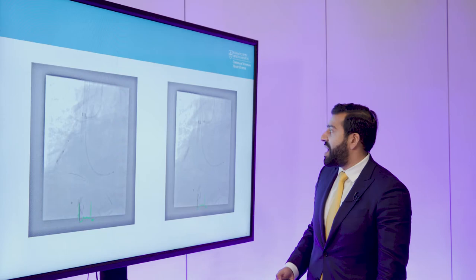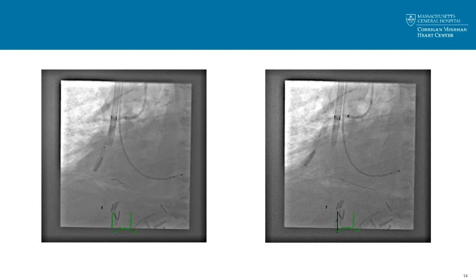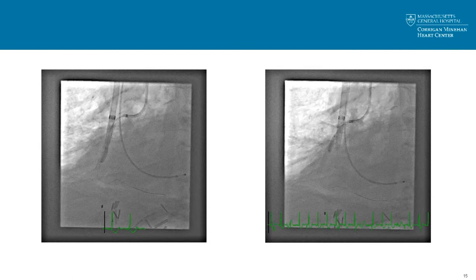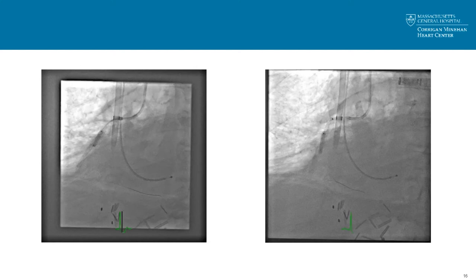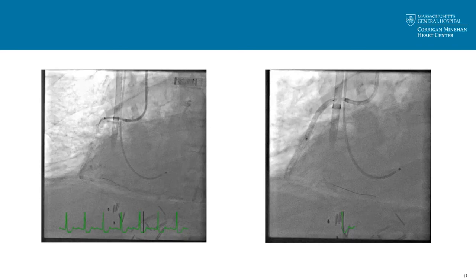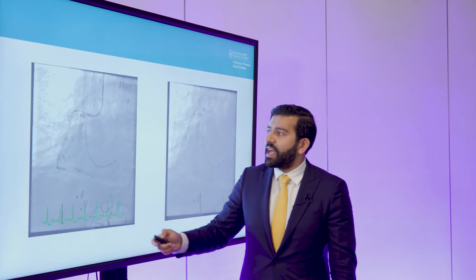Each balloon has 80 pulses, so we delivered 80 pulses working back from distal to proximal. You can see this is starting to open distally and proximally. The most recalcitrant area is also starting to give. There are two sensors on the balloon — you want to line up the sensors to the areas you really want to target, because that's where the greatest impact is. We kept doing that until we achieved full expansion.